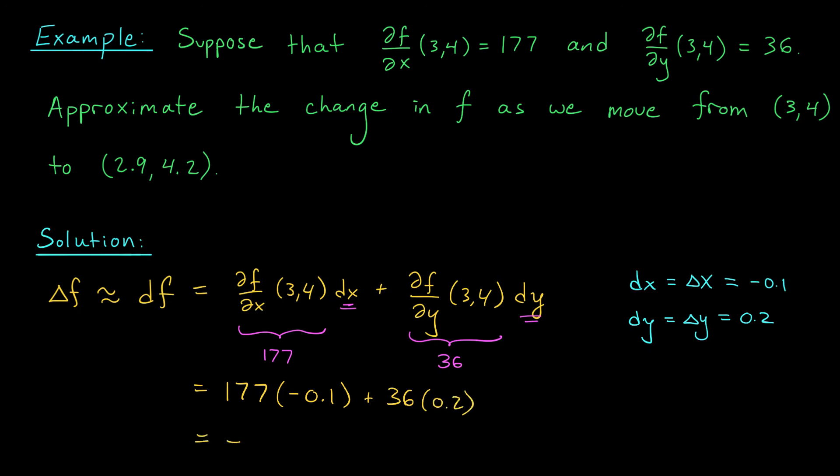That's minus 17.7 plus 7.2. I believe that is minus 10.5. So in summary, we expect the value of the function to decrease by about 10.5 units as we move from (3, 4) to (2.9, 4.2).